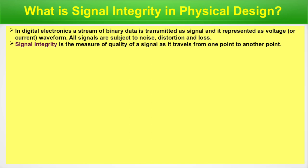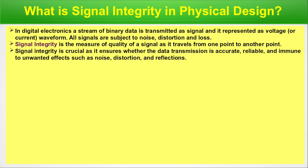In signal integrity, what we measure is that in a practical and realistic world, when a signal travels in a system, how much its quality degrades while traveling from one point to another. We must consider the reasons which make quality of signal degrade. Signal Integrity is crucial as it ensures whether the data transmission is accurate, reliable, and immune to unwanted effects such as noise, distortion, and reflections.